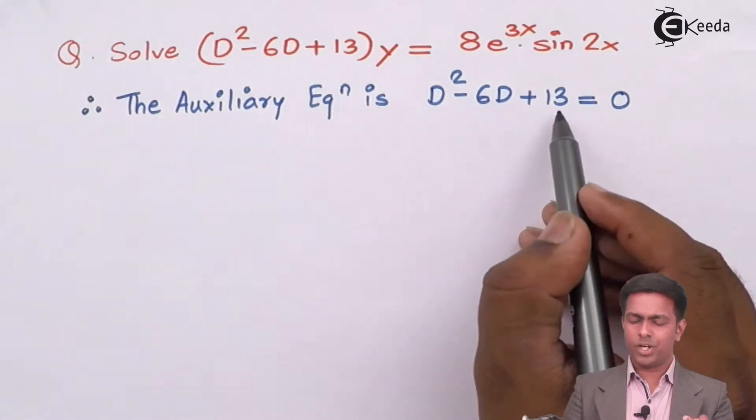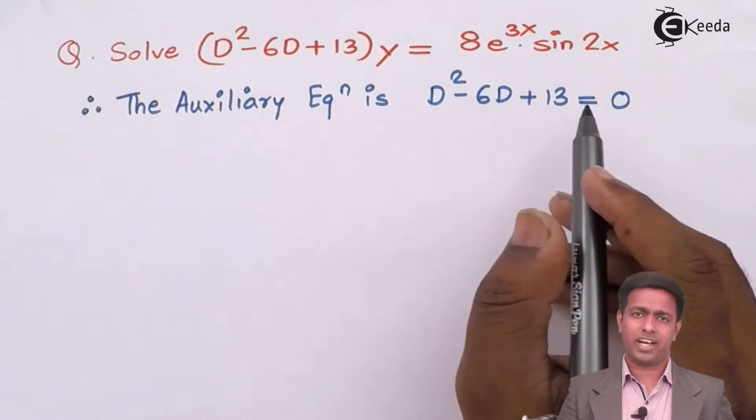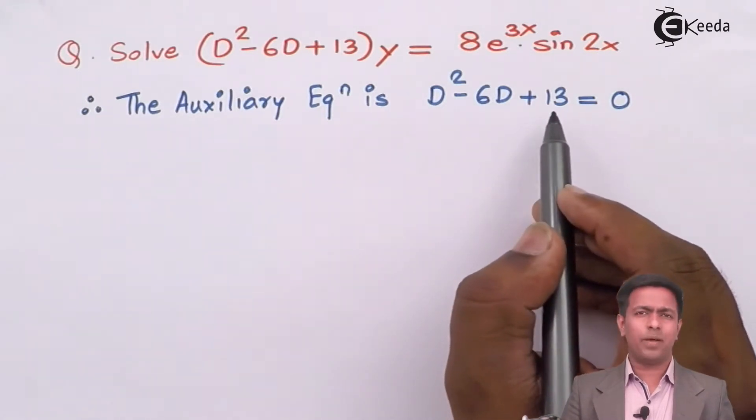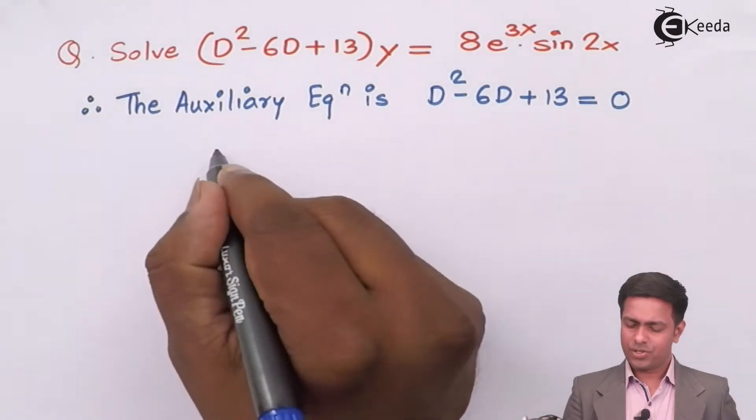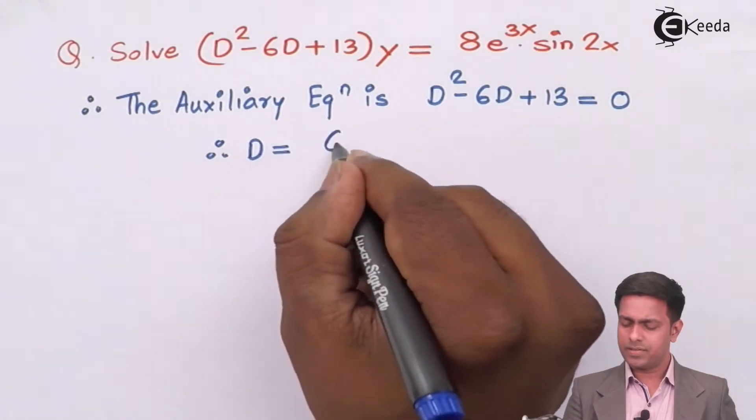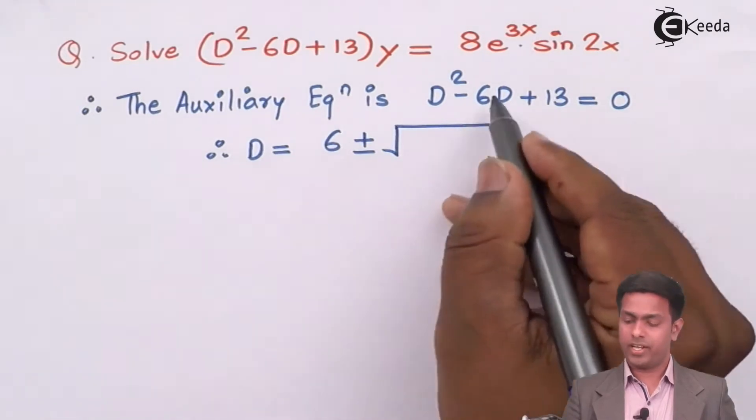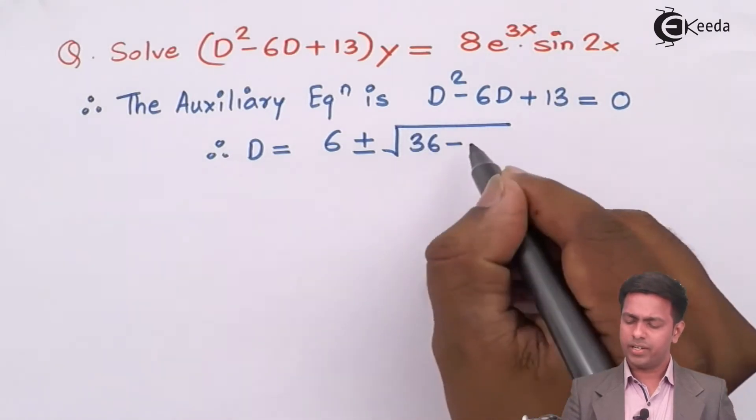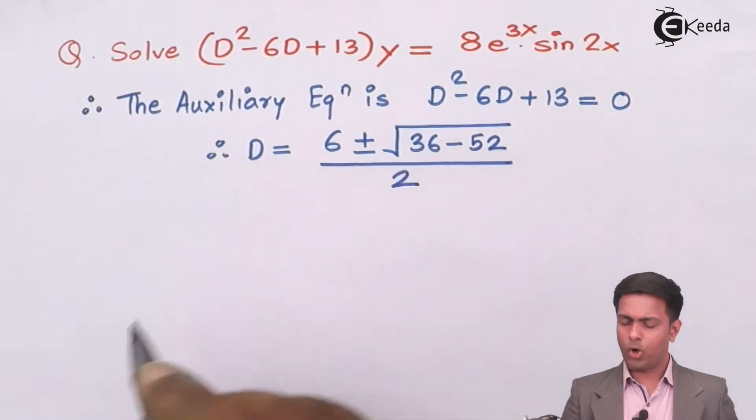Now the last term or the constant is 13 and for 13 we don't have factors since it's a prime number. We will use the formula method to get the roots of this quadratic equation. Therefore D is -b, b² which is 36 minus 4ac so 4 into 1 into 13 which is 52 upon 2.